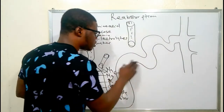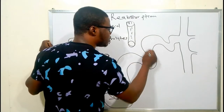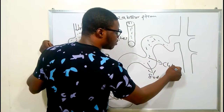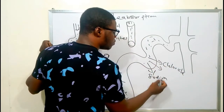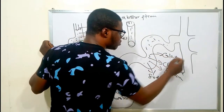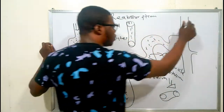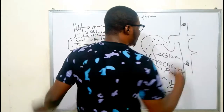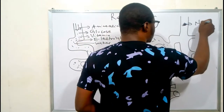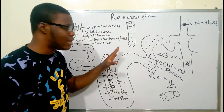The distal convoluted tubule reabsorbs sodium, chloride, potassium, and some calcium back into the bloodstream. Finally, for the collecting duct, it has two groups of cells: the principal cells and the intercalated cells. The principal cell reabsorbs sodium and water.